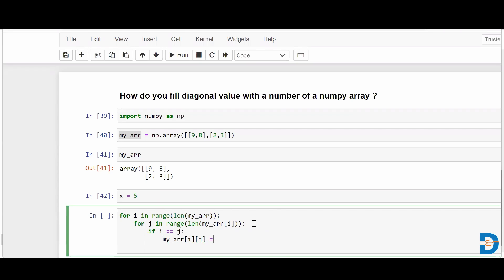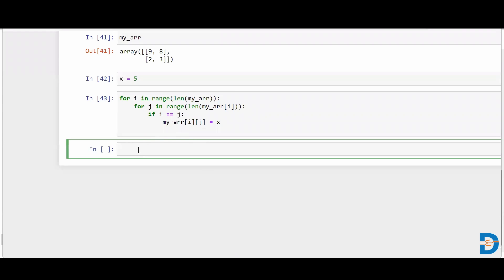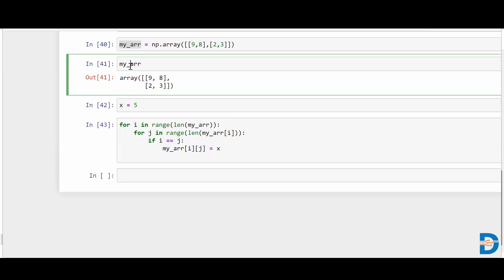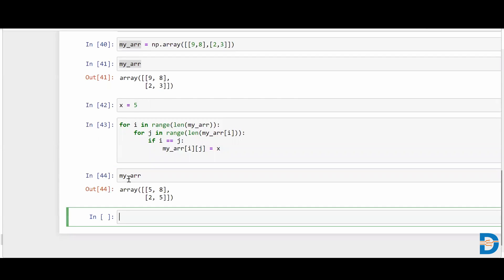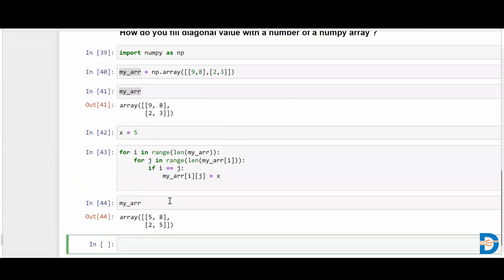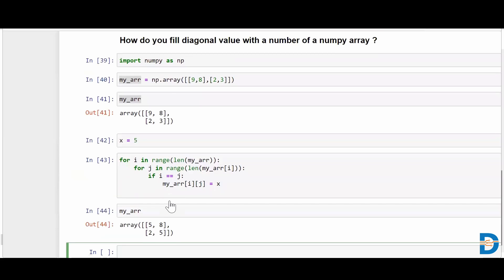Run this, run your my_arr, and you can see that both the diagonal elements have been converted to five. So this was like the brute method where you can go over one by one.